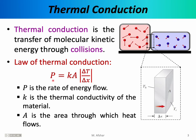The law of thermal conduction tells us that if the wall is very thick, the amount of energy flowing through it will be smaller — a thicker wall presents better insulation. If the area is large, the amount of energy flowing through the wall will be larger. The rate of energy flow also depends on the difference in temperature: if the two temperatures are equal, no heat will flow, but if one object is very cold and the other very hot, there will be a large rate of energy flow.